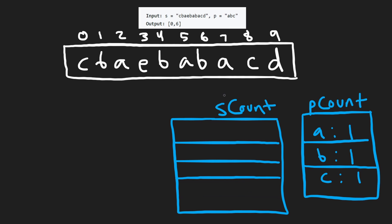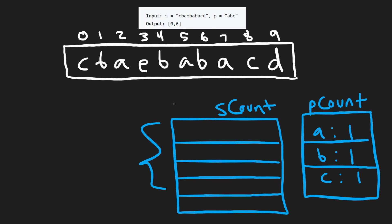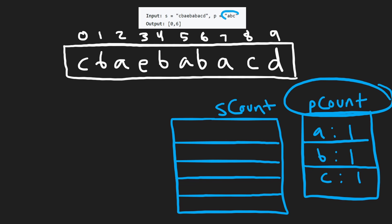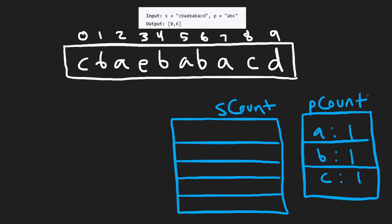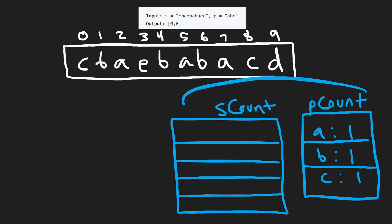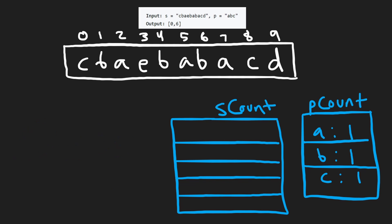You might wonder: how do we determine if the two hash maps are equal? That requires a loop, so what's the time complexity? It would be the number of unique characters in P. Since the problem states characters are limited to lowercase a through z, comparing two hash maps is at worst O(26) — that's how many lowercase English characters exist. So with all that said, you can probably figure out the rest of the problem.